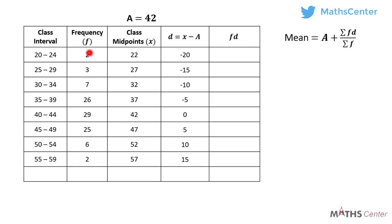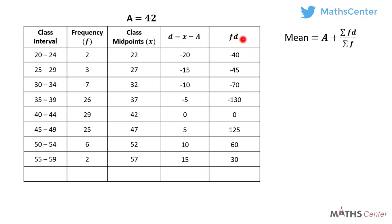We get fd by multiplying the f values by the d values. The first is 2 times negative 20, giving negative 40. Then 3 times negative 15 is negative 45. Then 7 times negative 10 is negative 70. Then 26 times negative 5 is negative 130. Then 6 times 10 is 60, then 6 times 10 is 60, and 2 times 15 is 30. When we add all the fd values together we get negative 70, so sigma fd equals negative 70.